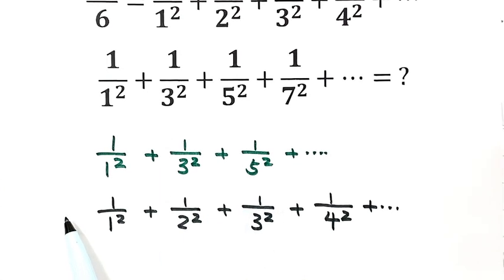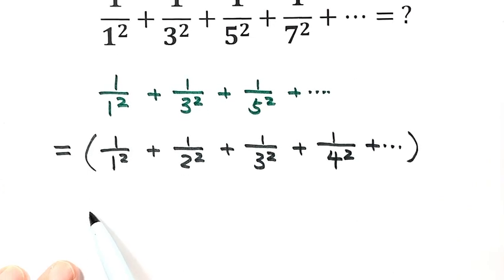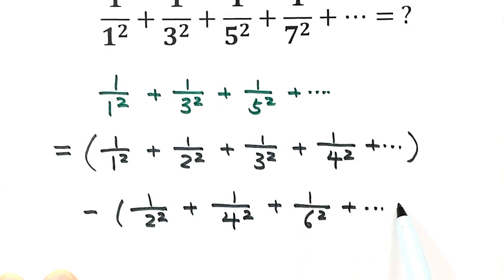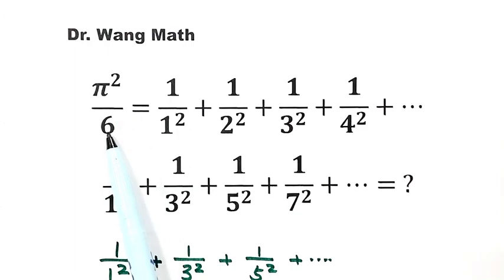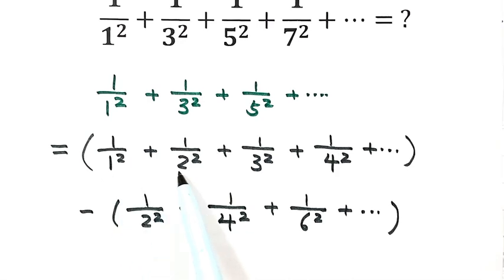So if we want to put an equal sign, we need to subtract those even positive integers from the denominator — that is, subtract 1/2² + 1/4² + 1/6² and so on. The full sum result is given: it equals π²/6, so we use π²/6 for that part.